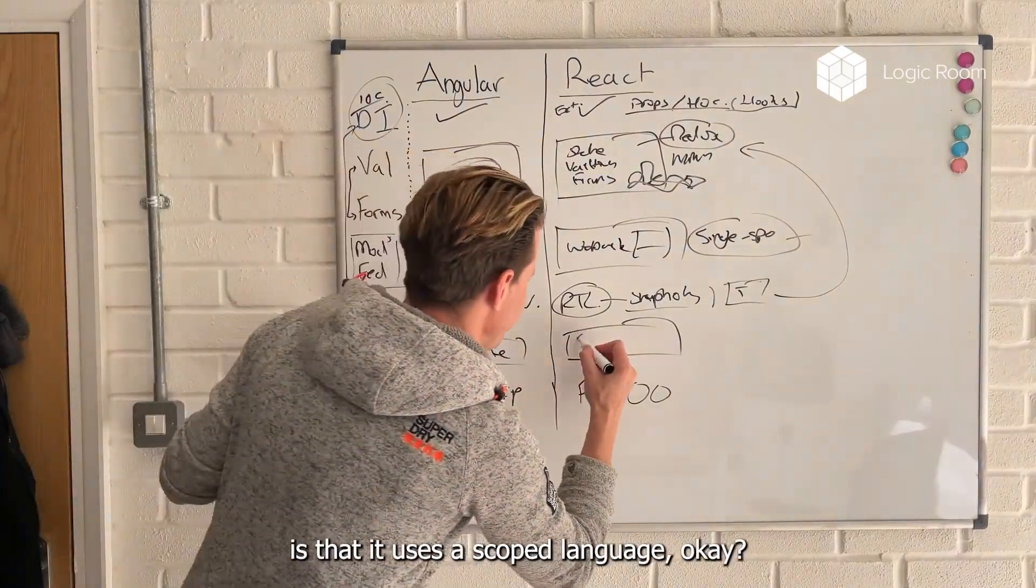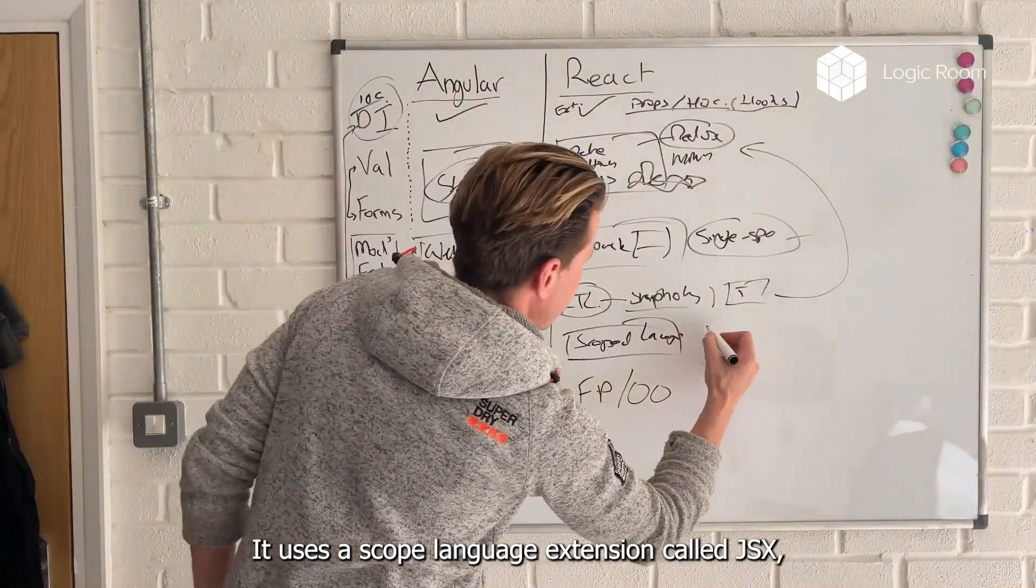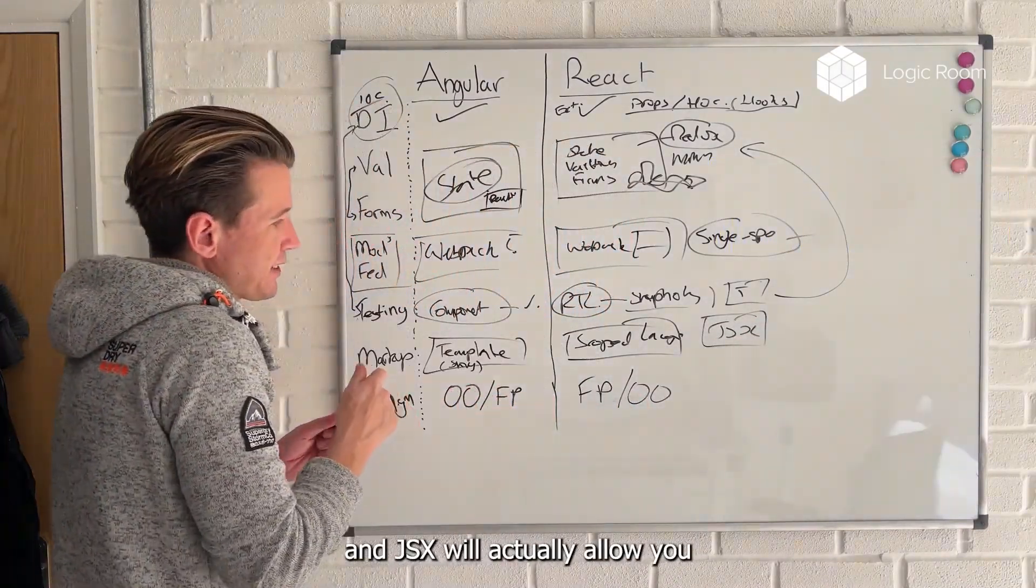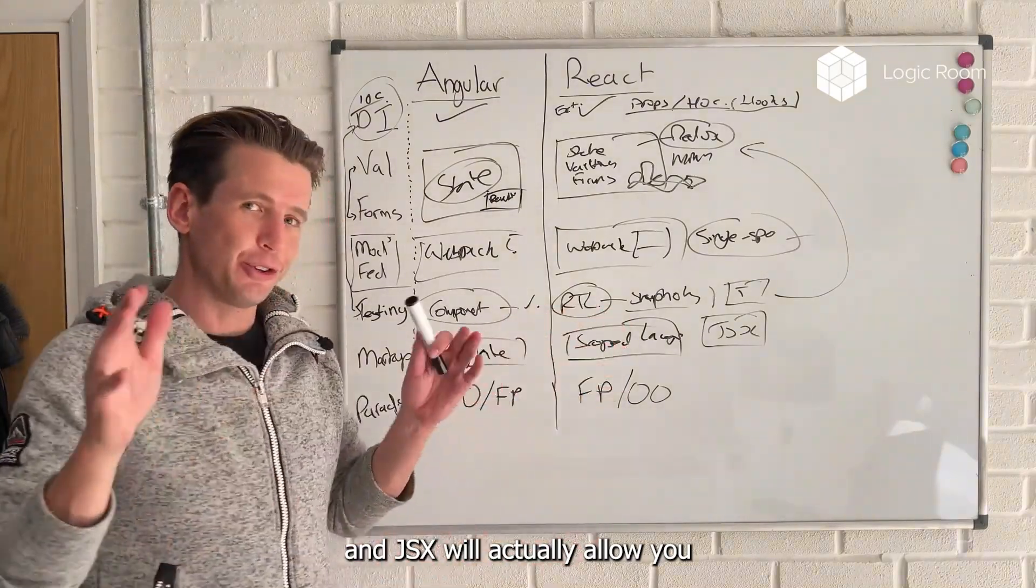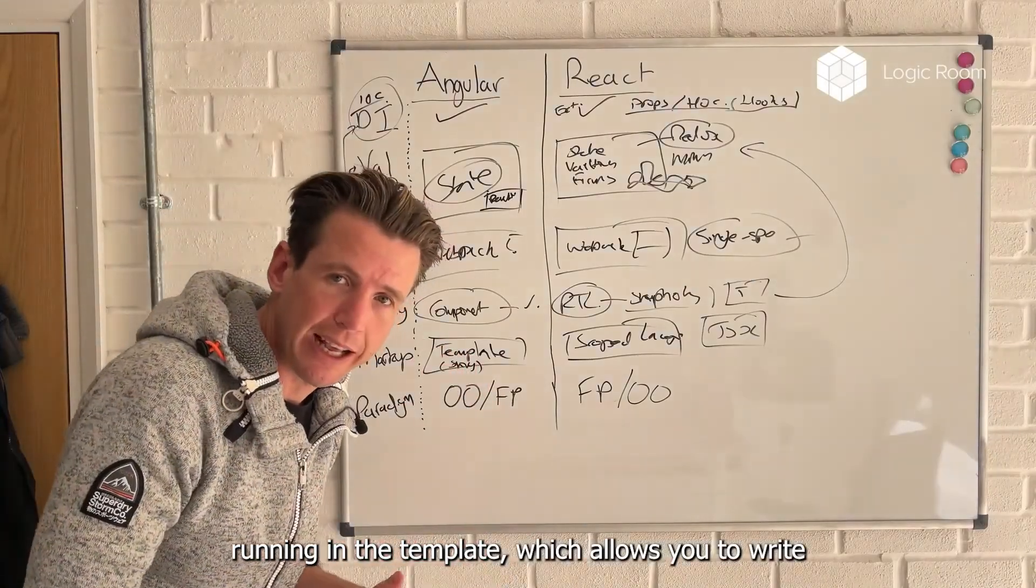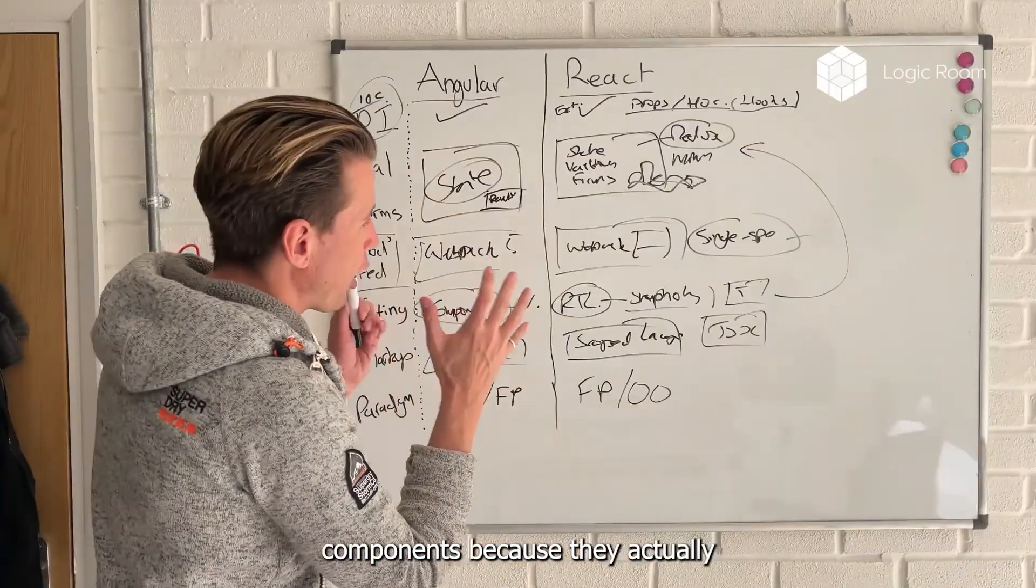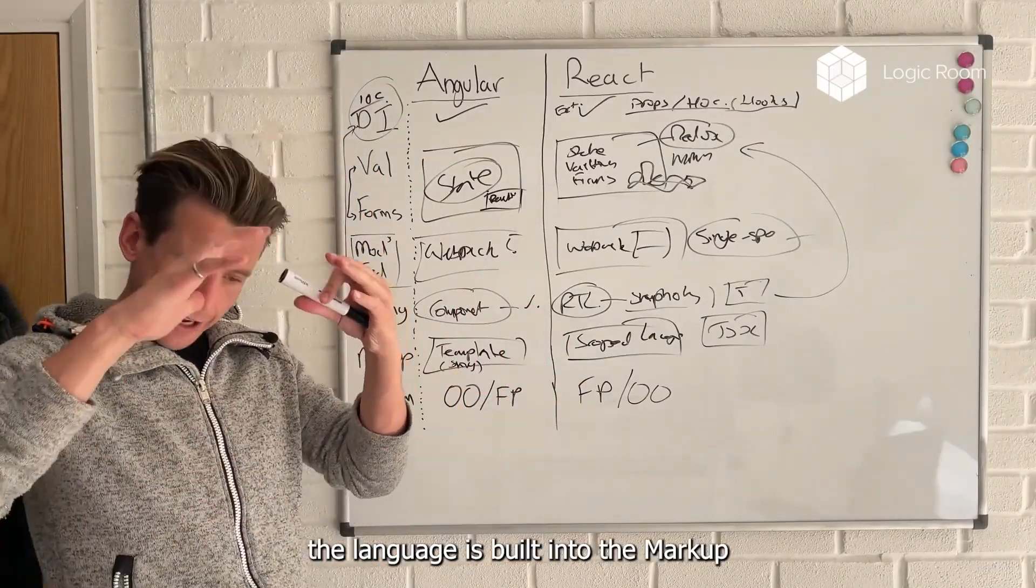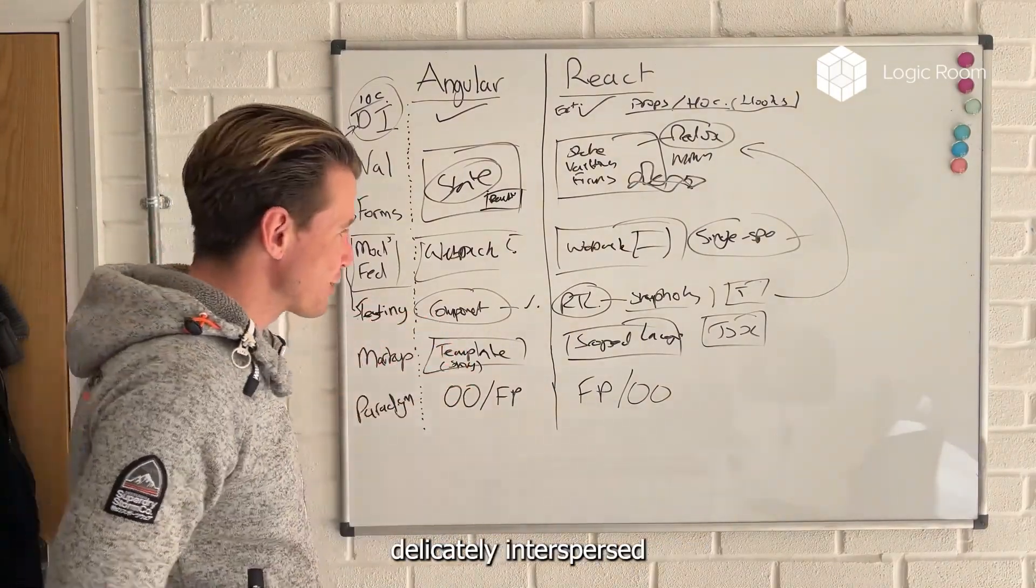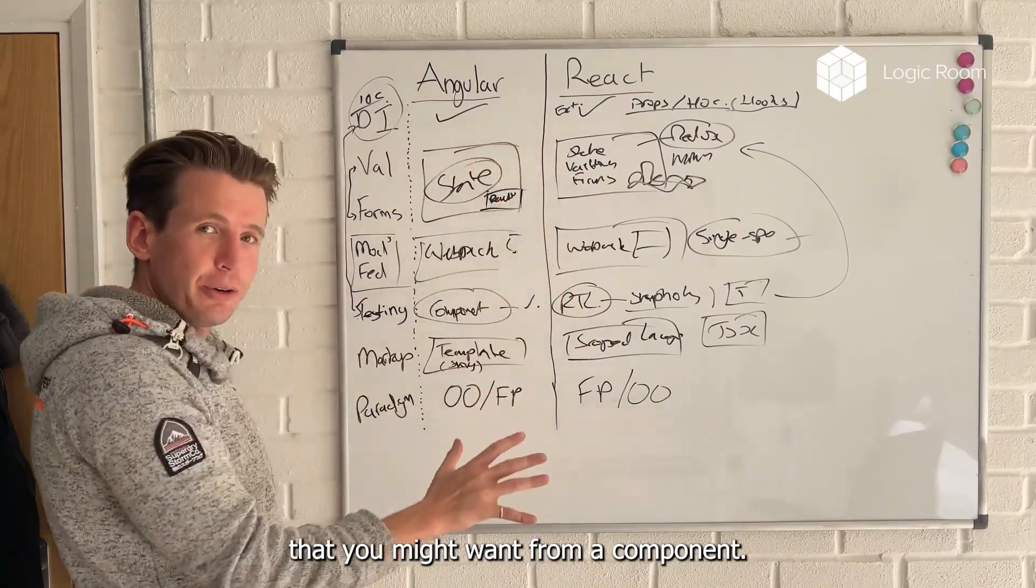The difference with React is that it uses a scoped language extension called JSX. And JSX, and this is the smart bit of it, will actually allow you to have JavaScript running in the template, which allows you to write more expressive components. Because the language is built into the markup, which means that the markup can be more delicately interspersed with the behavioral things that you might want from a component.